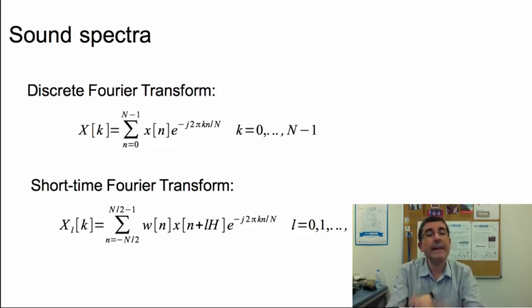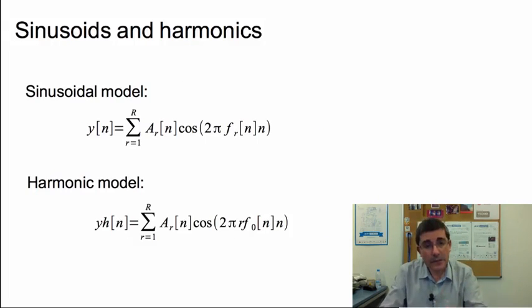And then we went over the time varying version of that, which is the short time Fourier transform. So instead of having a single spectrum, we have a sequence of spectra. And that's the x sub l of k, which is this idea of time varying frequency representation of a sound. And we could consider that as the first model that was useful for us, the first analysis synthesis model that could capture any sound. In fact, this was an identity system, therefore we could analyze and synthesize any sound.